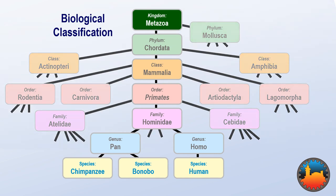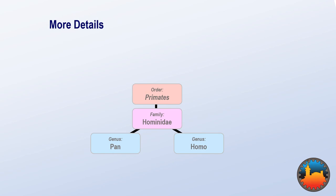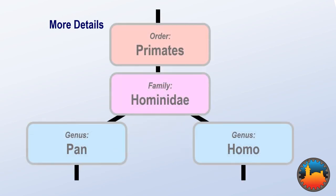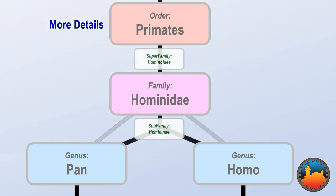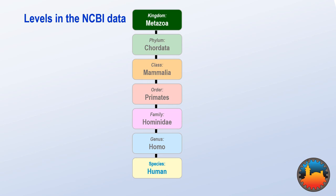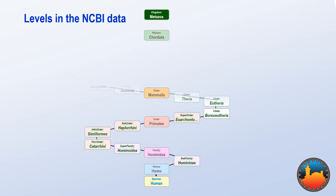Except that if we focus on the family, we have extra levels — we have subfamilies and superfamilies. Indeed, if we look at the NCBI data about humans, we don't have seven levels. We have 28.